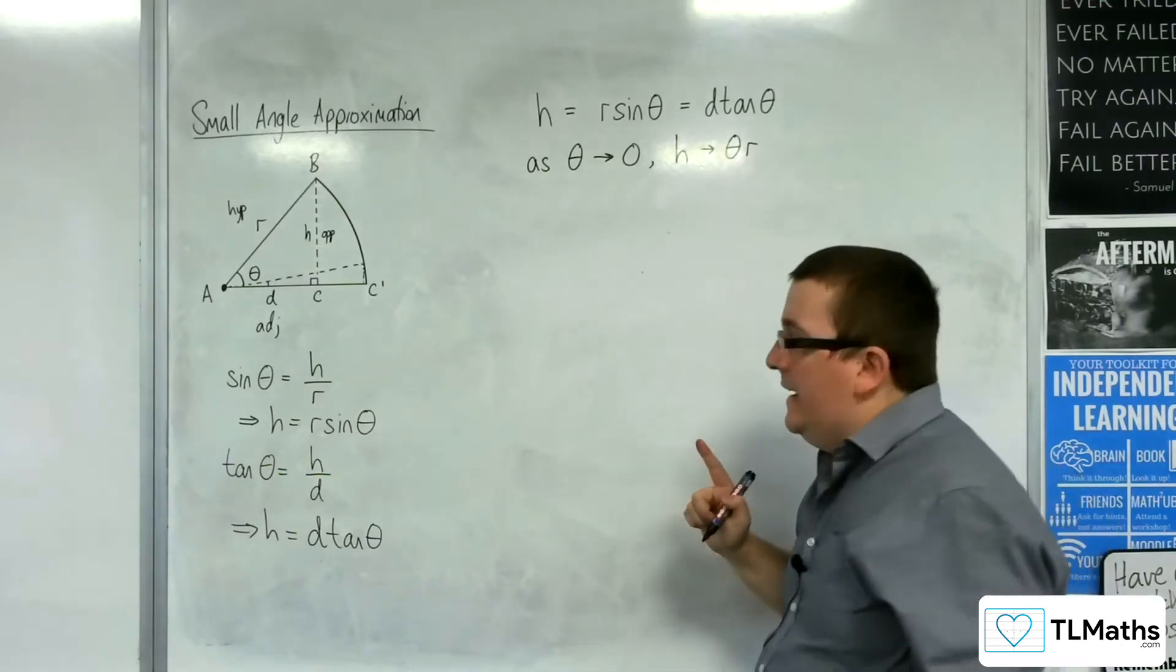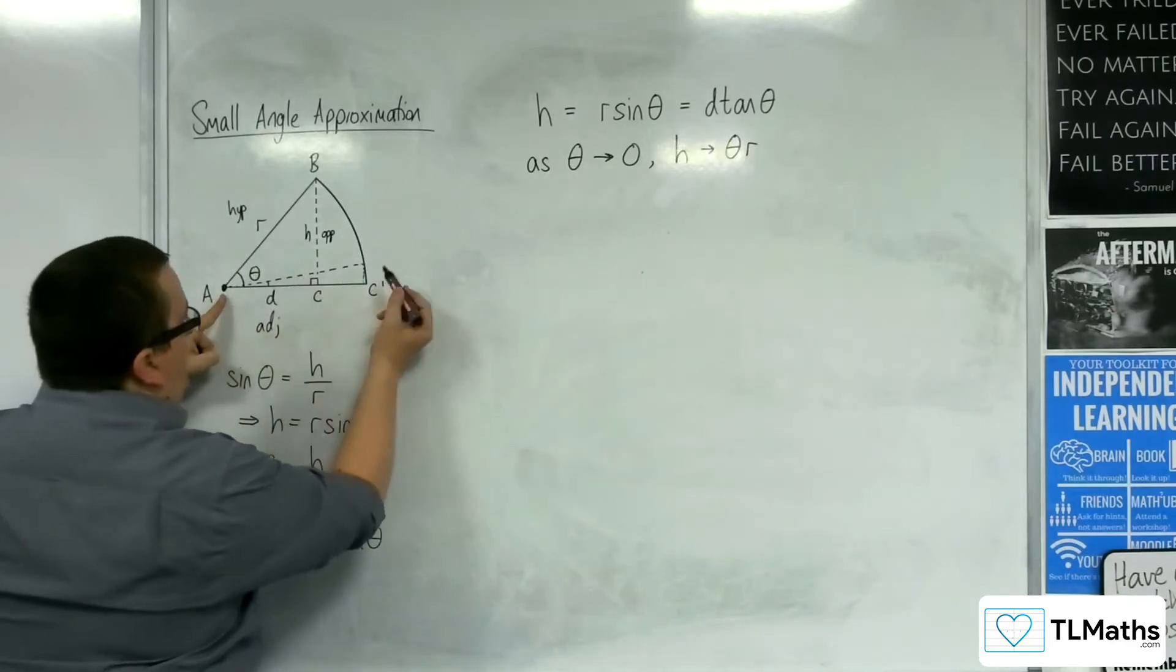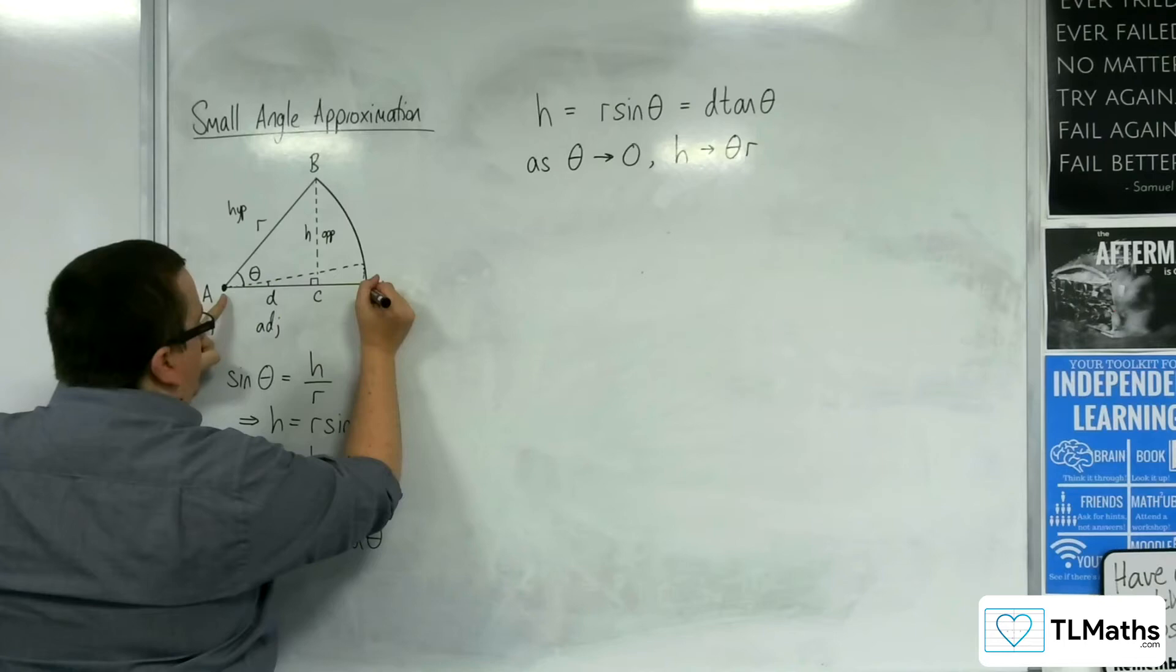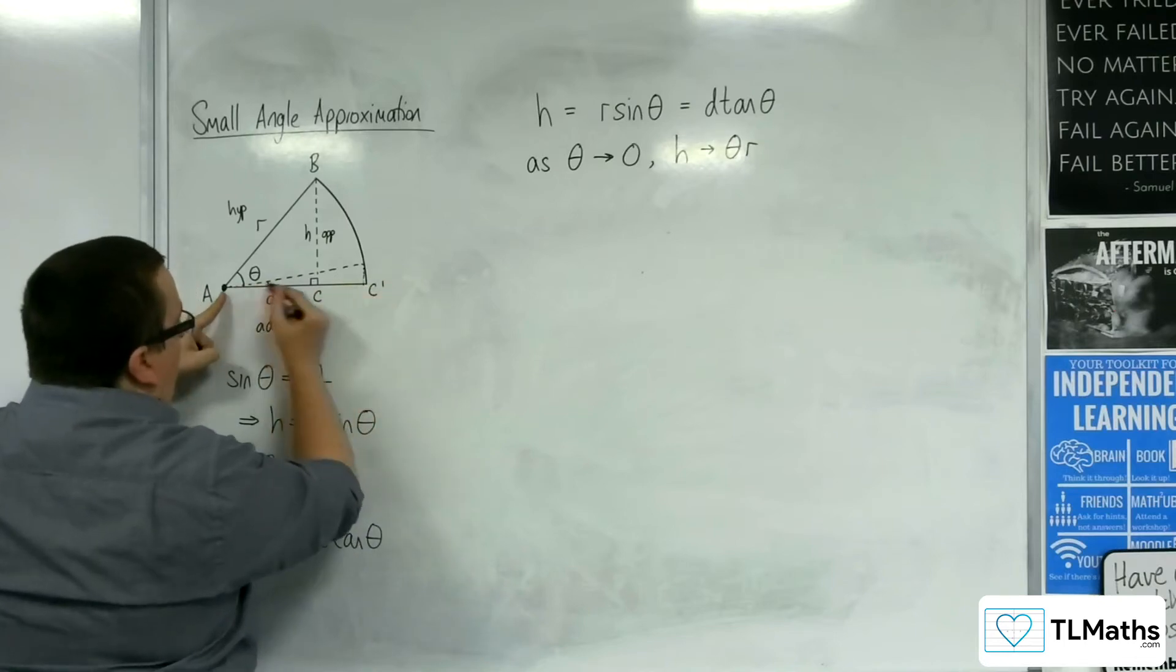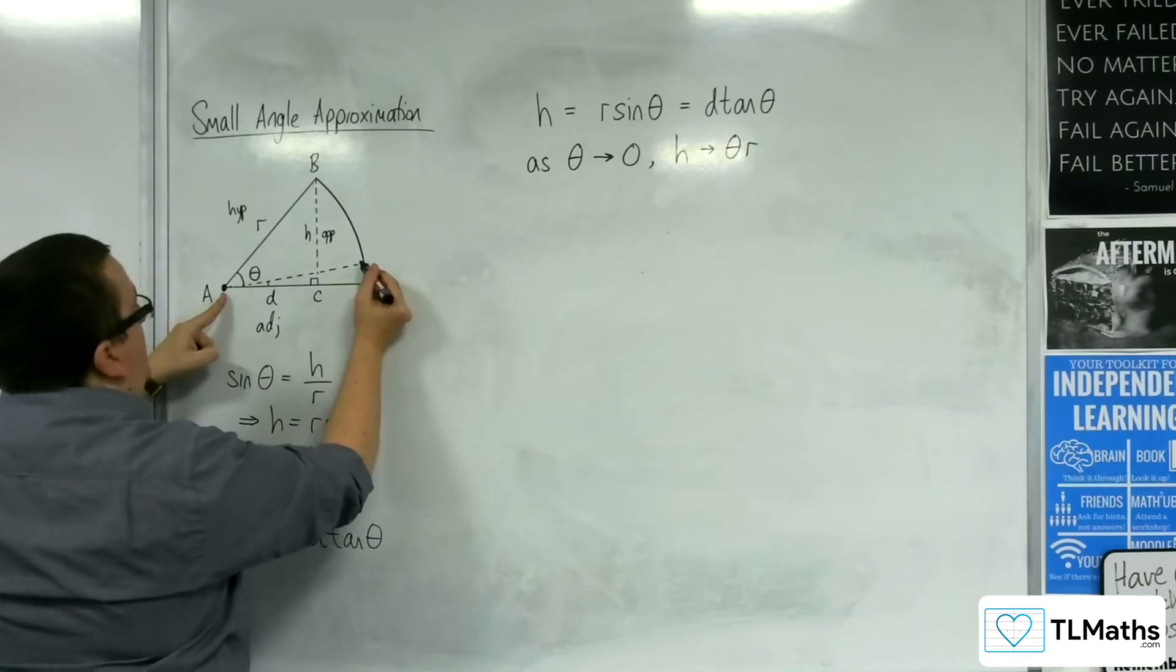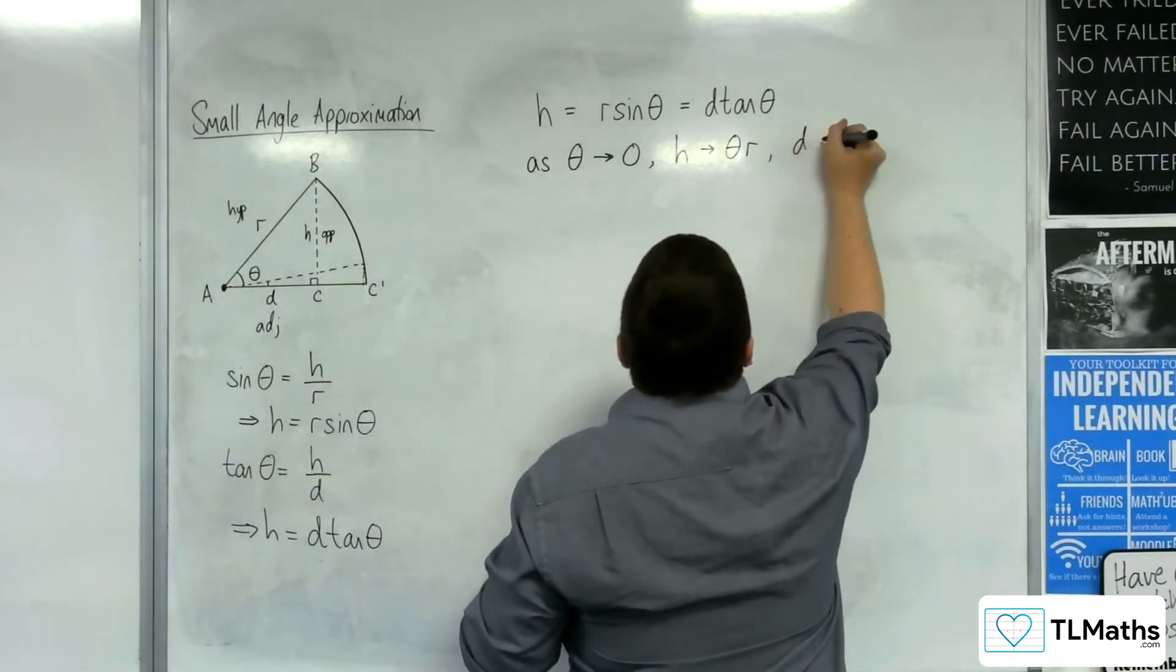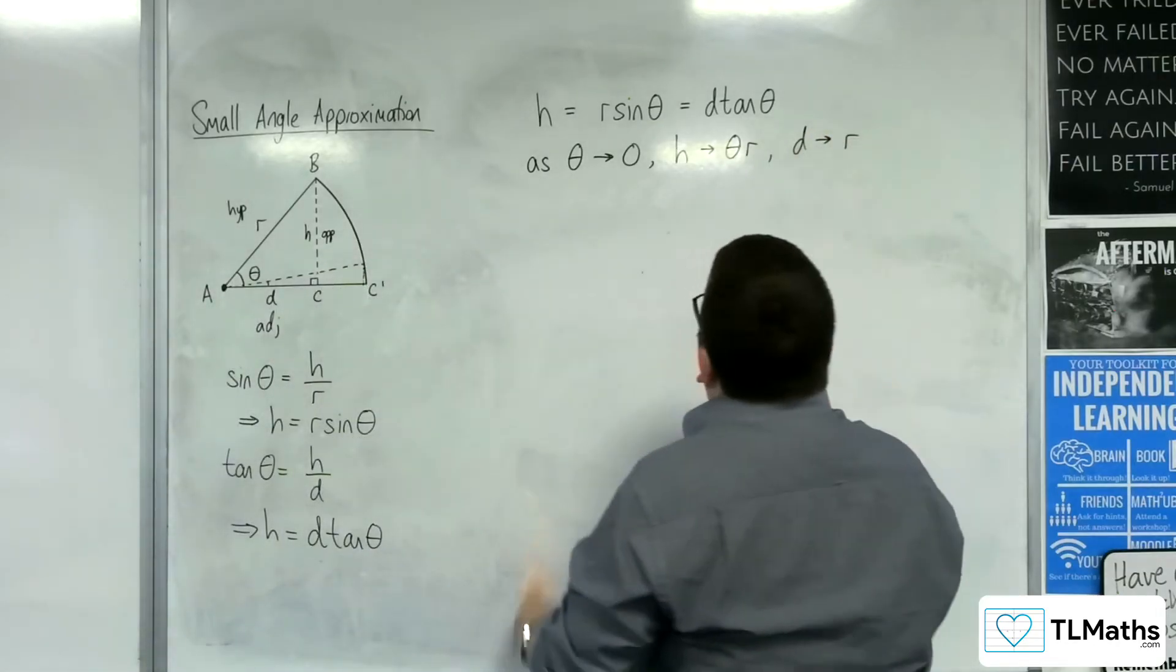What's happening to D? Well remember, D is the length between A and C, but C would now be over here. So D is getting closer and closer and closer to being that full length between A and C prime, which is the same as R. So D is getting longer and is tending towards R.